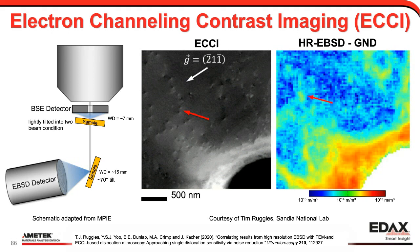Another technique I'm seeing much more of is electron channeling contrast imaging, ECCI. You can do this in the SEM — convenient since EBSD is also an SEM-based technique. You mount a BSE detector below the pole piece and lightly tilt the sample into a channeling condition, typically at a smaller working distance. If you get in the right position, you start to see evidence for individual dislocations. Comparing ECCI with HREBSD showing GND densities, you can see evidence for these dislocations — it isn't one-to-one all the time, but there are similarities especially when counting dislocations to estimate density.